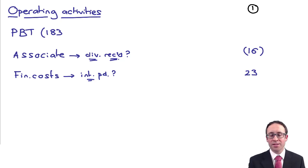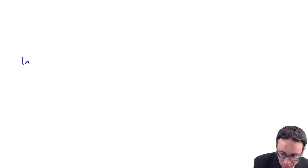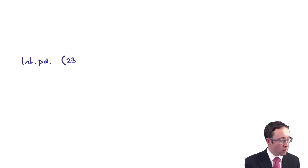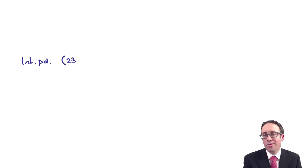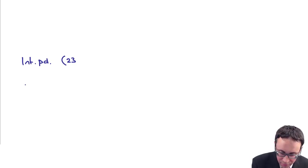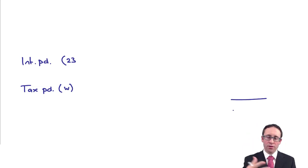Within your operating activities, leave yourself plenty of space. At the bottom of that first page, put your interest paid — and I know that my interest paid is 23. I can't see any opening or closing interest payables, so I'm not thinking there will be an adjustment. Just leave it in brackets at 23. Then you'll have your tax paid, which you'll work out in a moment, and then we'll be able to net everything off. Those two figures should be at the bottom of that first page.